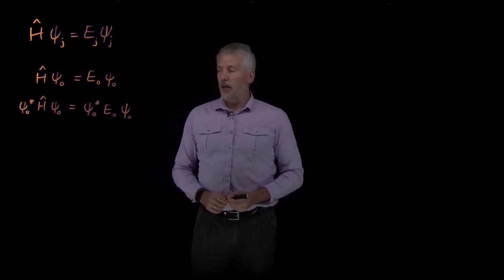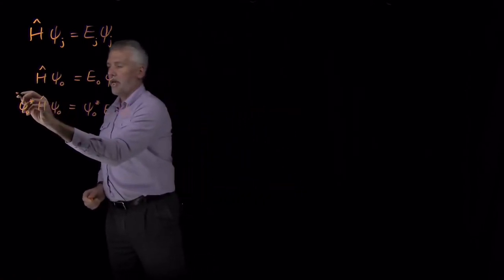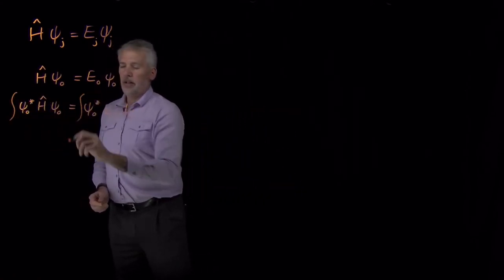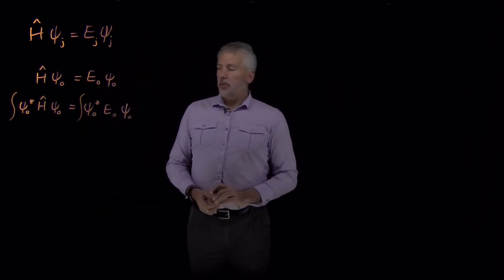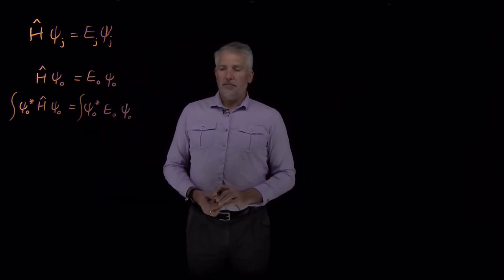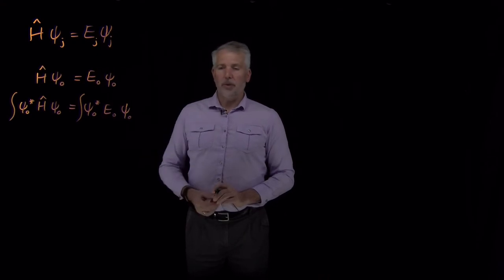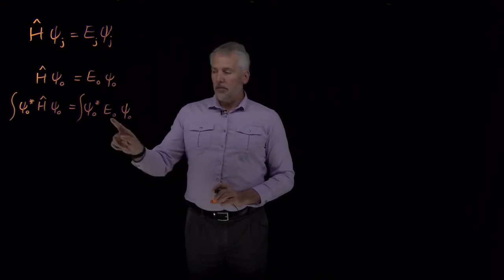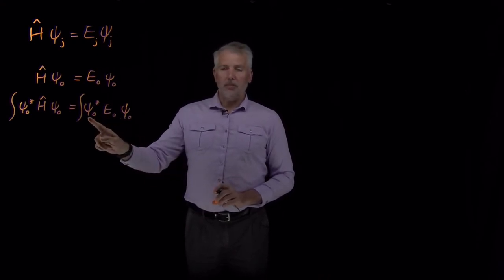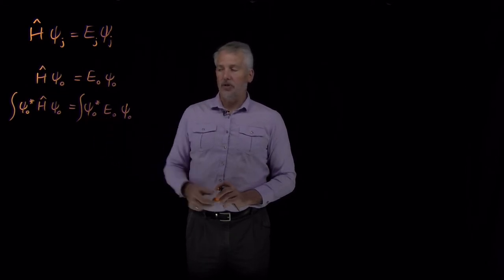If I've written this expression down, the reason I've written it down in this way is because if I then integrate this expression on both sides, then it turns out we can do something with the right-hand side. It doesn't matter whether I'm pre-multiplying or post-multiplying on this side because E, the energy, that's just a number. That's not an operator. So that's just a particular constant.